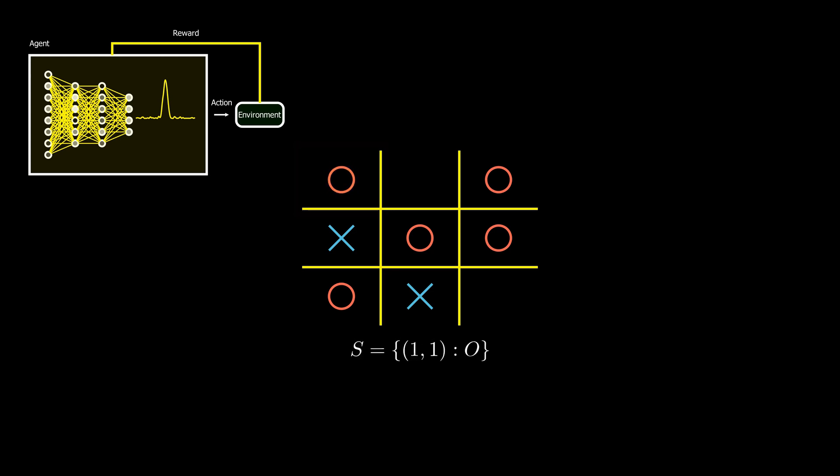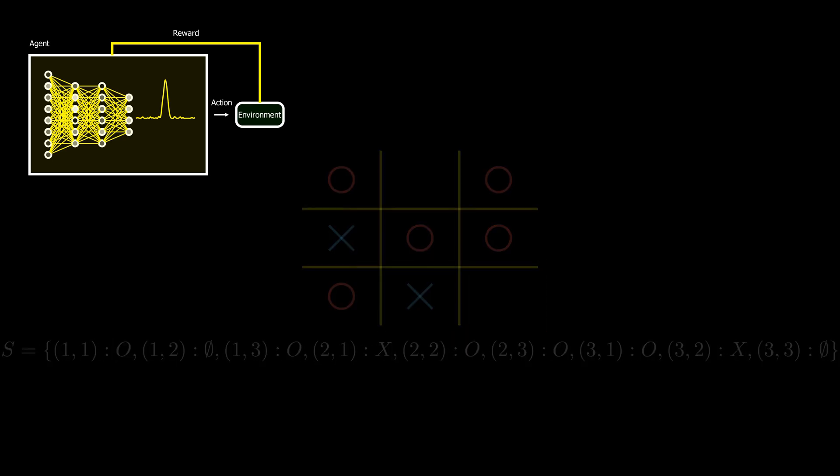A state represents the current configuration of the tic-tac-toe board. Each state is defined by the placement of X's, O's, and empty spaces. There are many possible states, ranging from an empty board at the start to a completed game.